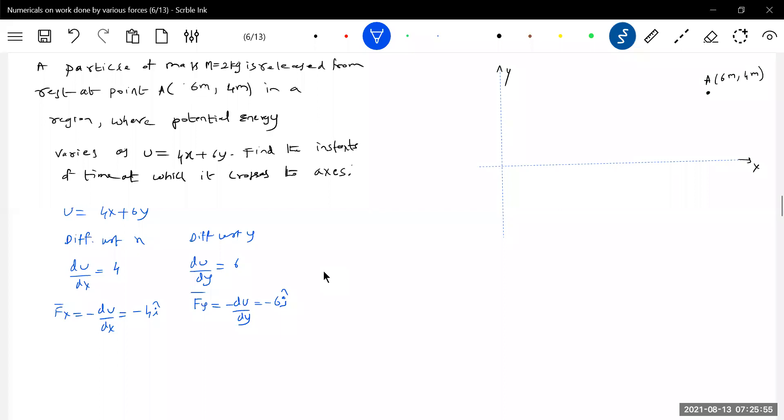If you get a potential energy function and differentiate with respect to x, you'll get the x component of force. If you differentiate with respect to y, the y component of force. If some z is also there, differentiate with respect to that to get the z component of force.